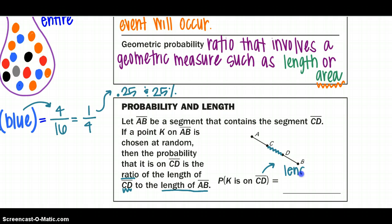The length of CD, which you will find the measure of, divided by the length of the entire segment, which is the length of AB, which again you will find the measure of.